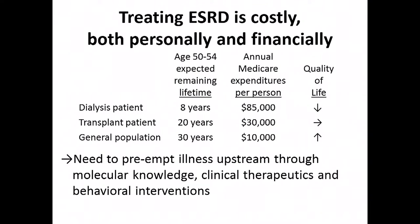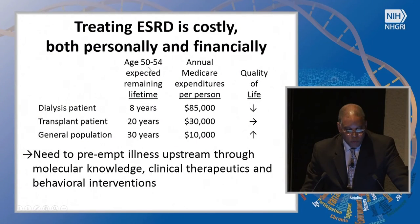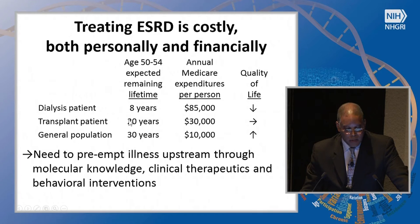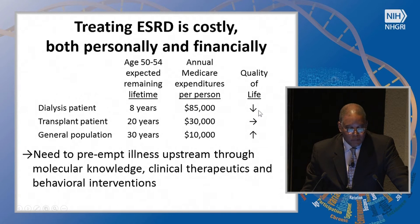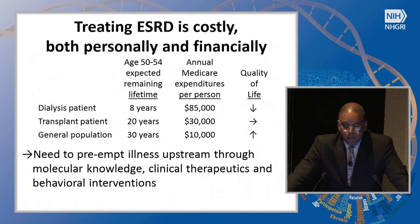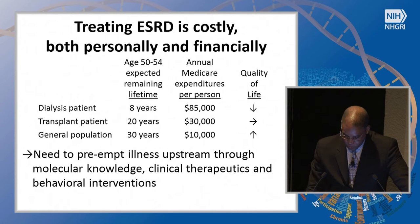Treating end-stage renal disease is costly both personally and financially. A 50-to-54-year-old person's expected remaining lifetime in the general population is 30 years, but if you're a dialysis patient, it's eight years—or 20 years if you're lucky enough to get a transplant. Annual Medicare expenditures are eight times higher for someone on dialysis than in the general population. Quality of life is poor on dialysis, but transplant can restore quality of life. There's a real need to preempt illness upstream through molecular knowledge, clinical therapeutics, and behavioral interventions.